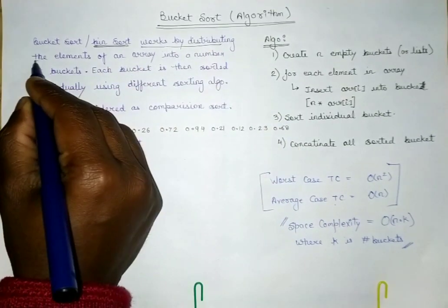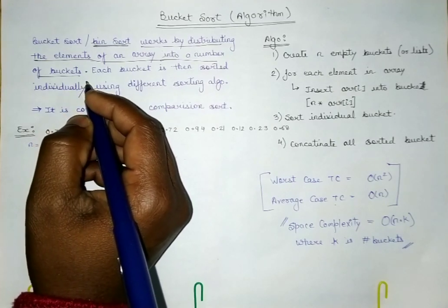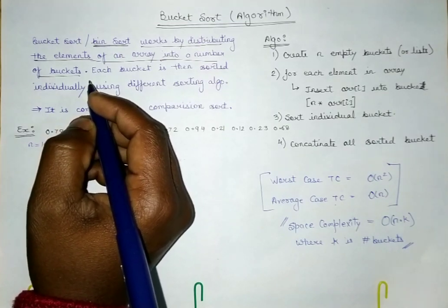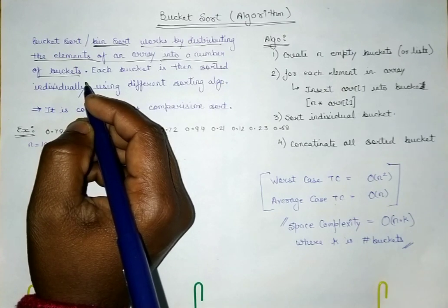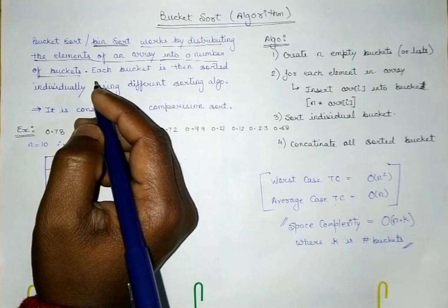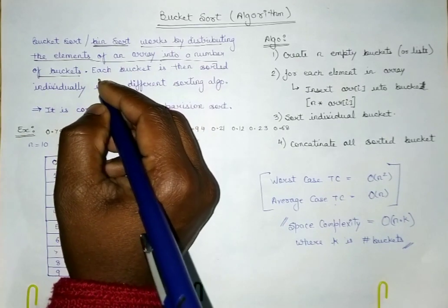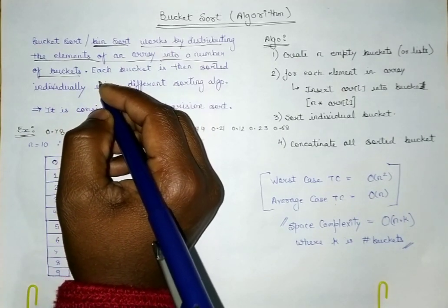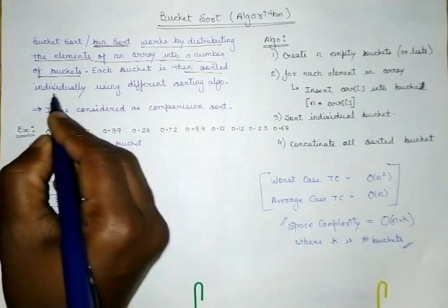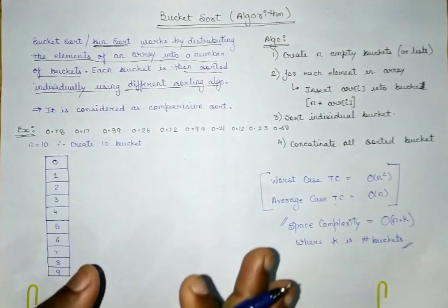The working principle of bucket sort is that it works by distributing the elements of an array into a number of buckets. The number of buckets will be equal to the number of elements. Then, each bucket is sorted individually using any other sorting algorithm, and then we join all those elements of the buckets one by one to give the sorted sequence.